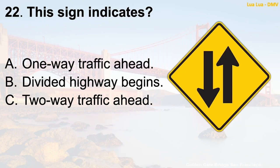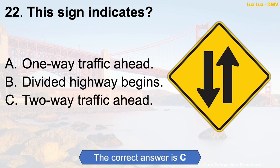Question 22: This sign indicates — A. One-way traffic ahead. B. Divided highway begins. C. Two-way traffic ahead. The correct answer is C: Two-way traffic ahead.